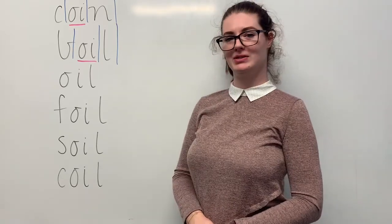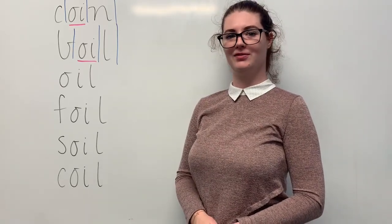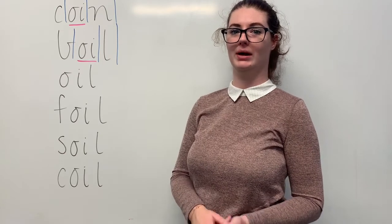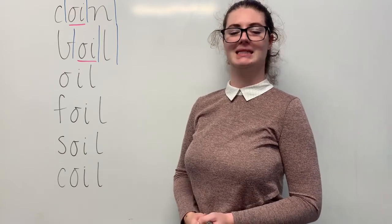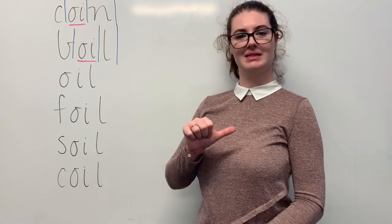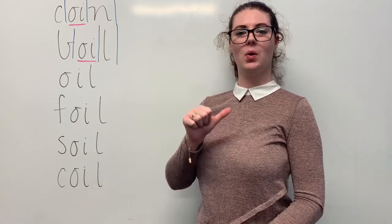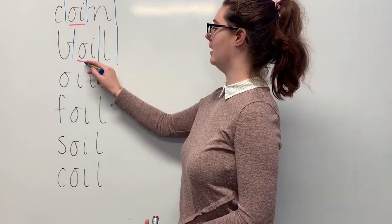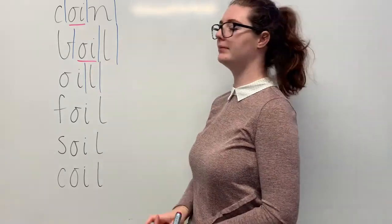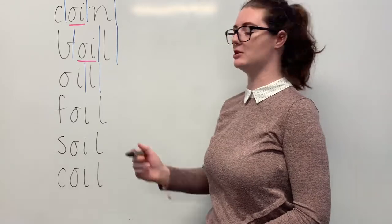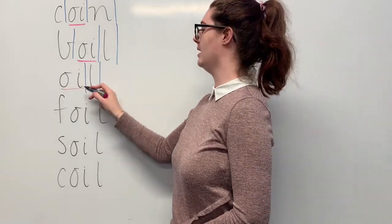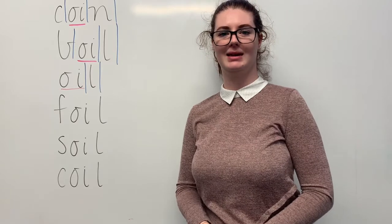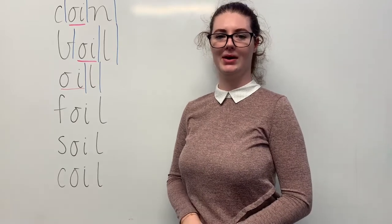Our next word is oil. Say oil. For me to make fried chicken, I need to boil oil. The sounds in oil are, together, oil. The letters in oil are o, i, l. The part we need to remember is the oi digraph making the oi sound. Can you teach it to me? Oil: o, i, l.